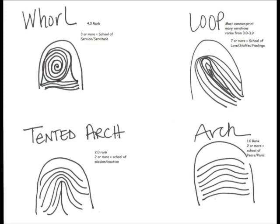You may see variations. We are all human. We don't look like the drawing that I have there. We're going to have variation on our fingerprints. The arch has a ranking of one, so it's our lowest ranking print. And two or more of these will put you squarely in the school of peace. Pretty cool stuff.